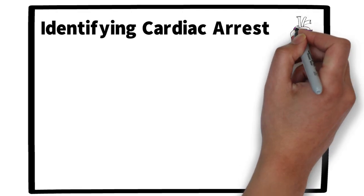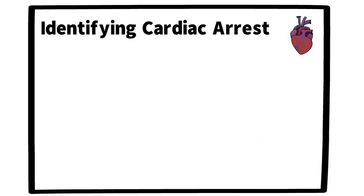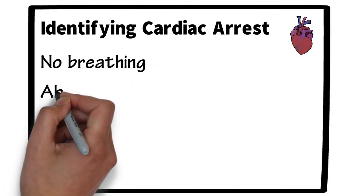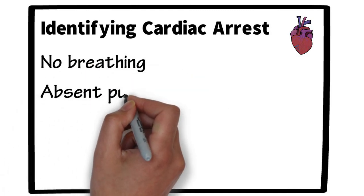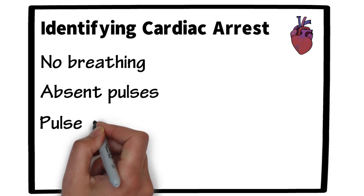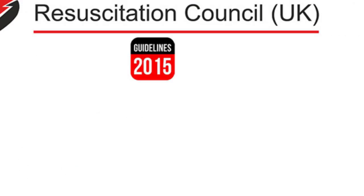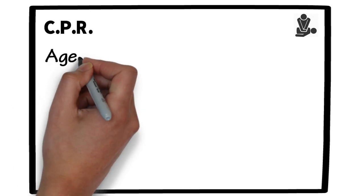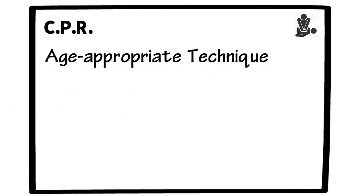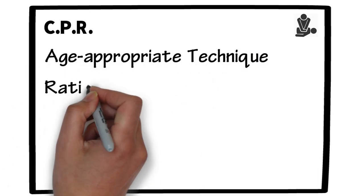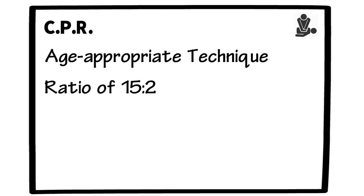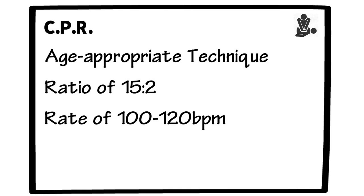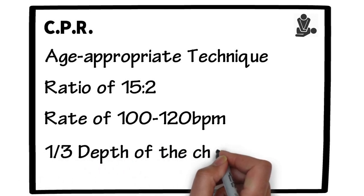It's at this point that we're probably going to identify cardiac arrest if it exists, and that will mean there's no breathing and absent pulses, or a pulse of less than 60 beats per minute in the paediatric algorithm. We'll then start CPR using an appropriate technique dependent on the patient's age, with a ratio of 15 compressions to two effective ventilations, a rate of 100 to 120 per minute, and a depth of a third of the chest.